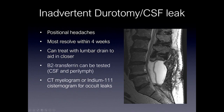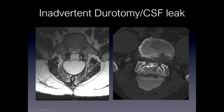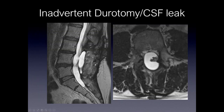Inadvertent durotomy or CSF leak can result from surgery. These can cause positional headaches and most resolve within four weeks, usually treatable with lumbar drain to aid in closure. If unsure whether a collection is a post-operative collection or CSF, you can send the fluid for beta-2 transferrin, which is only found in CSF and perilymph. A CT myelogram or indium-111 scan can also be performed for occult leaks. In one example after laminectomy, a myelogram clearly showed contrast spilling into the collection — consistent with a CSF leak. Another example clearly shows a connection between the thecal sac and the collection, confirming a CSF leak.